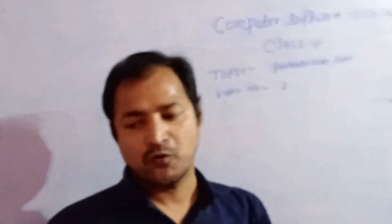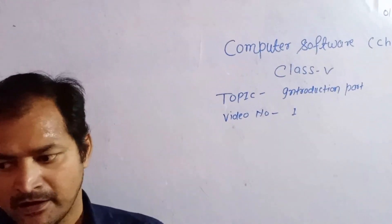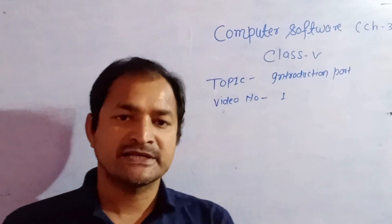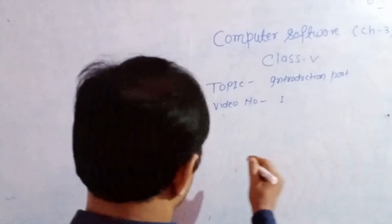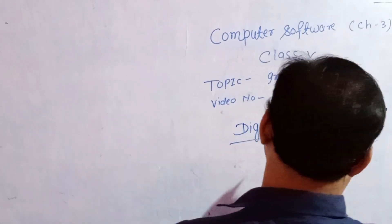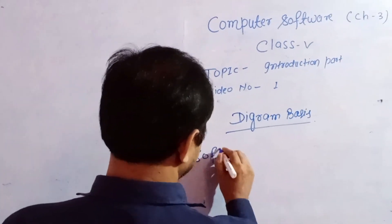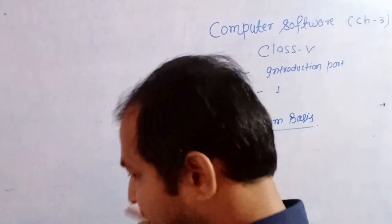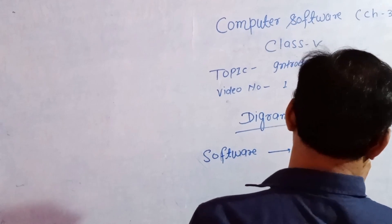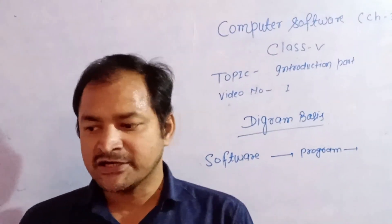First of all, what is software? Software is a set of programs and related data that are used to give instructions to the hardware.